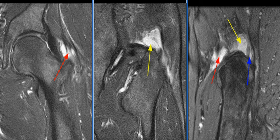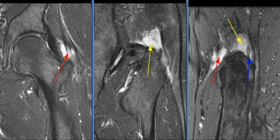A 67-year-old male with severe left hip pain after a fall. MRI examination shows complete avulsion of the gluteus minimus tendon from the anterior aspect of the greater trochanter with approximately 1.2 cm of tendon retraction.